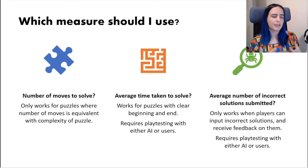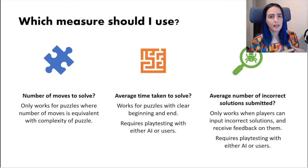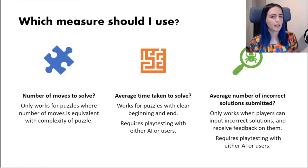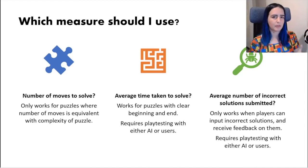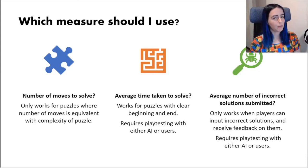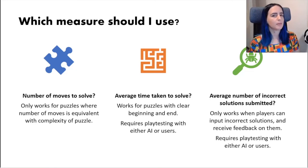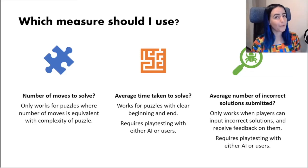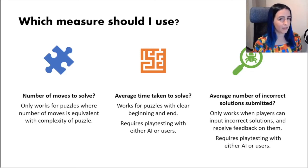This leads me to believe that different measures reveal different things about puzzles and difficulty levels in games, and you need to be careful about which measures you use — it really depends on the type of game. If your game has puzzles with an ideal number of moves, the number of moves can help represent difficulty. But for The Witness, the number of moves required didn't equate to difficulty. Average time taken worked really well for The Witness, but for Untitled Goose Game it didn't, because players can work on multiple puzzles simultaneously. Average incorrect solutions submitted works well but requires the game to allow submission of incorrect answers, which isn't always the case.